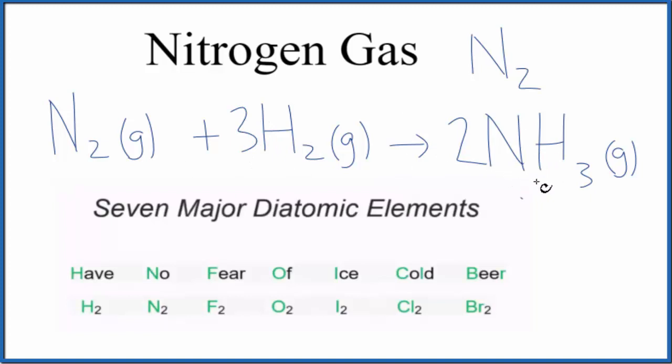So when you're writing equations and you have something like nitrogen gas or hydrogen gas, it's always going to be N2 or H2. And you can remember the seven major diatomic elements with this little saying here: Have no fear of ice cold beer.